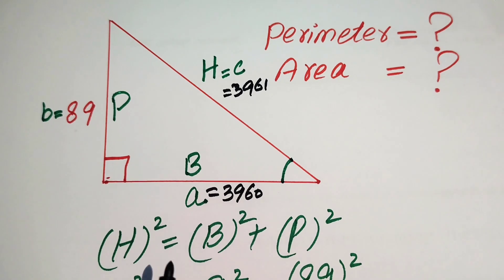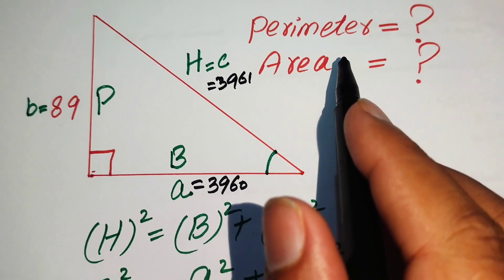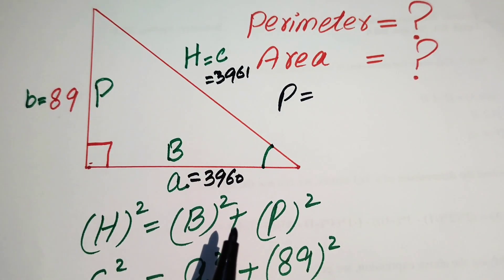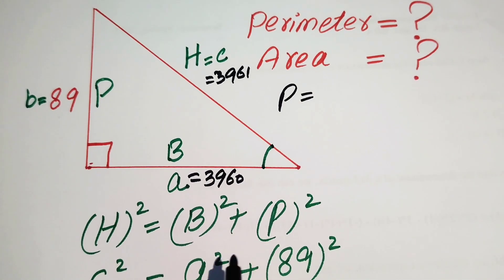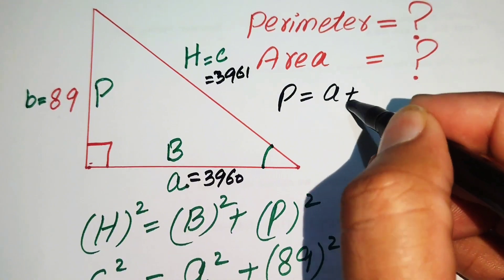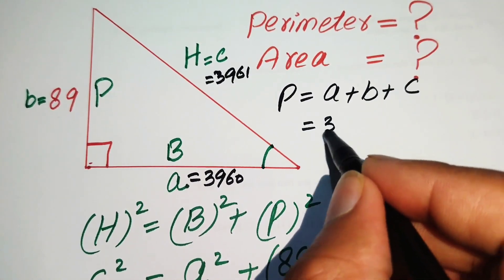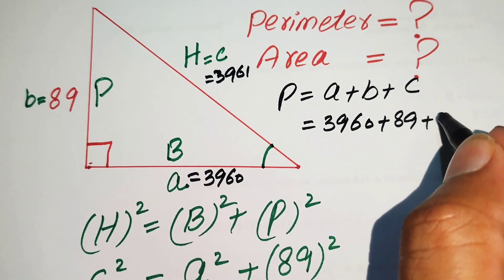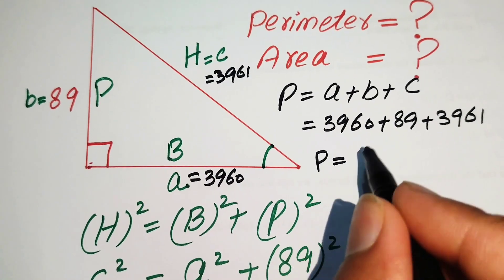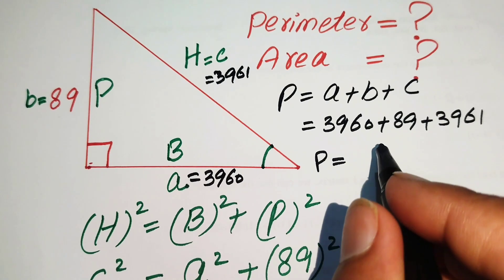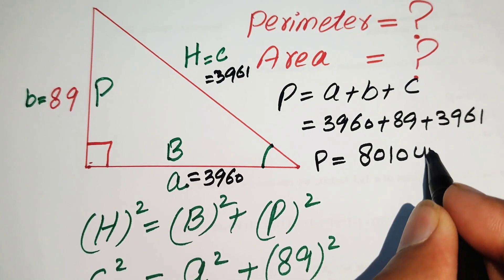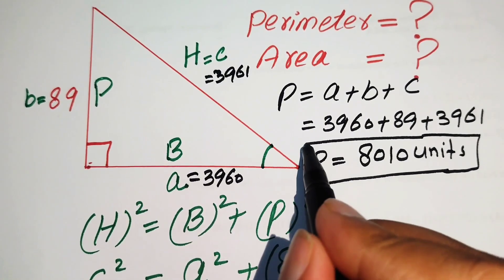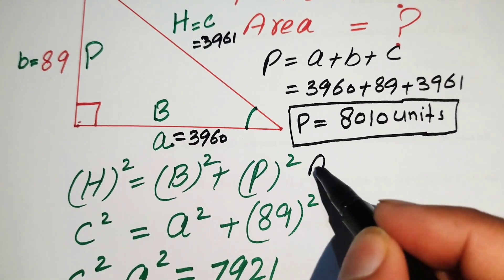We now have all three sides of the triangle: a = 3960, b = 89, c = 3961. Moving to find the perimeter, the formula is the sum of all side lengths: perimeter = a + b + c = 3960 + 89 + 3961 = 8010 units.